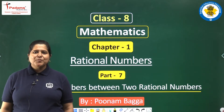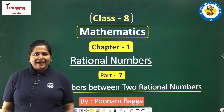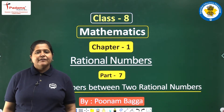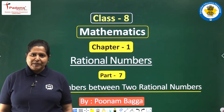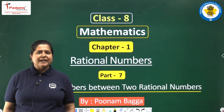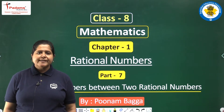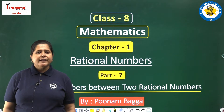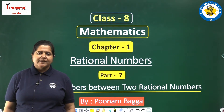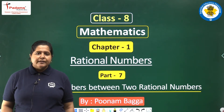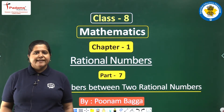Good morning children. This is Poonam Bagga back again with chapter 1, Rational Numbers. In our previous class, we had completed exercise 1.1 and discussed the representation of rational numbers on the number line. Today, we will be discussing the existence of rational numbers between any two given rational numbers. We will start with some simple questions involving whole numbers and integers.